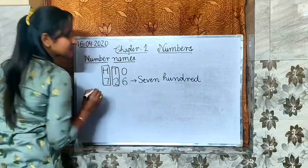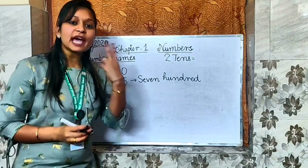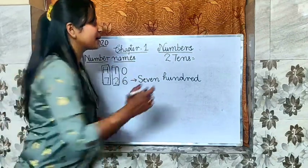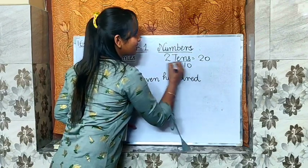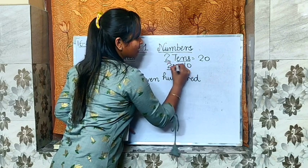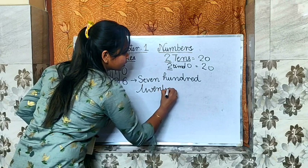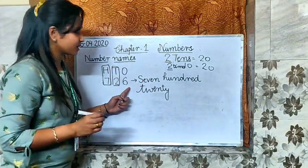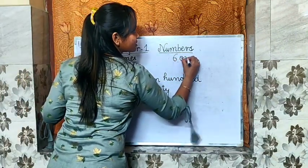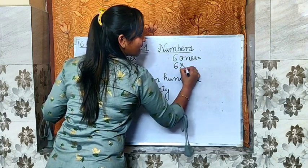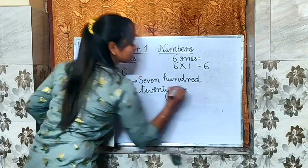Now 2 is on which place? 10's place. But we will not write '2 10's'. 2 10's means 2 times 10, which means 2 multiplied by 10, that means it is 20. So our number name here will be 20. And when we move forward to 6, it will be 6 1's. But what is the meaning of 6 1's? 6 1's means 6 only — 6 multiplied by 1. When we multiply any number with 1, our answer is 6 only. So here our number name is 6 only, not 6 1's.